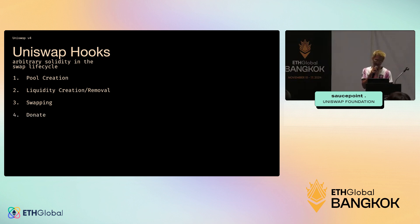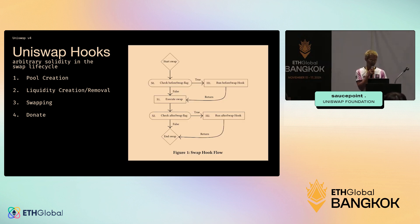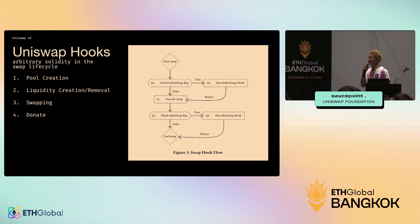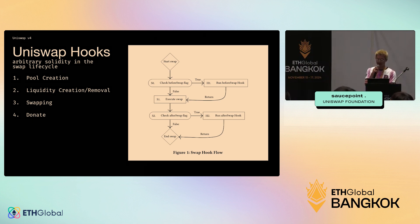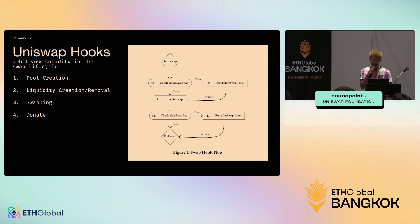I haven't seen many hooks around the donate function, so that's an interesting area to explore. This is what hooks look like — before a swap happens it checks if the pool is configured for it, and if a before-swap hook exists it makes an external call to your hook contract. That's a totally separate contract that you implement, and then it returns back to the core contract to run the swap logic.